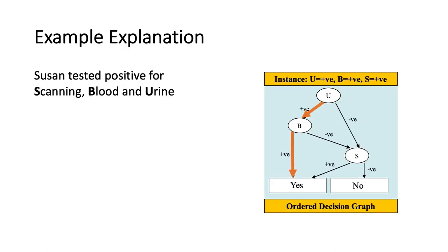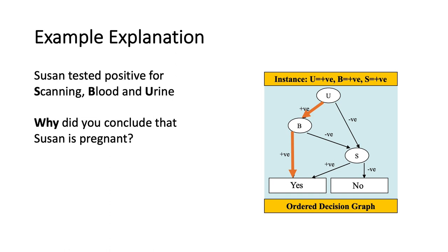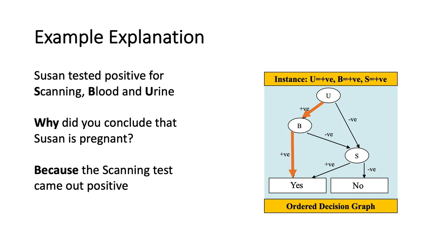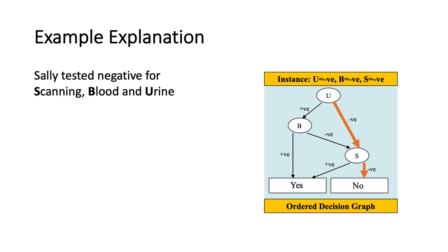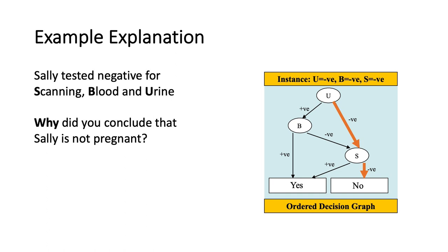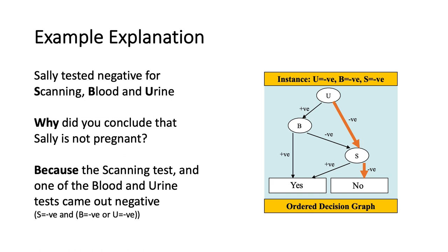Here's a concrete example with the symbolic classifier compiled from our naive Bayes. Patient Susan tested positive for scanning, blood, and urine. The classifier says Susan is pregnant. Why? Because the scanning test came out positive - it didn't matter that blood and urine were positive; those could have been anything else and the same decision would have been made. For Sally, who tested negative for all three tests and is classified not pregnant: the explanation is the scanning test was negative and one of blood or urine came out negative - it was not necessary for both to be negative.